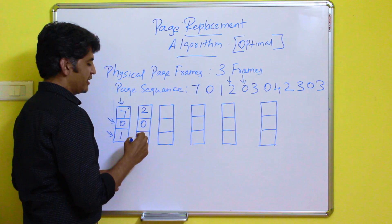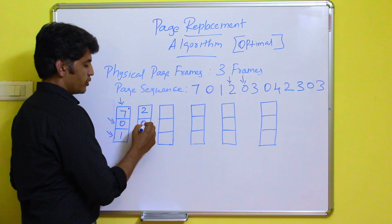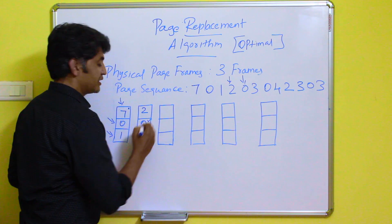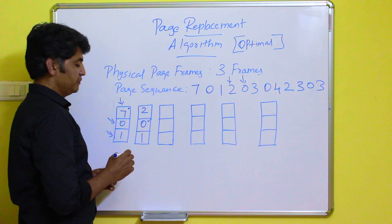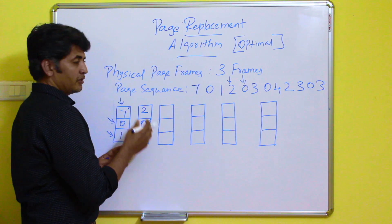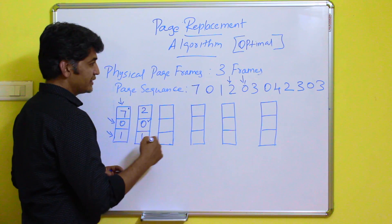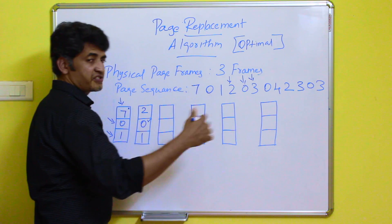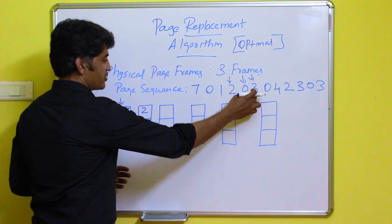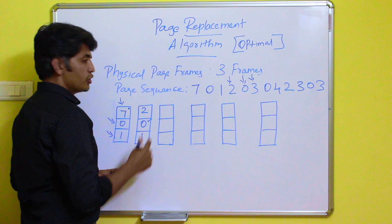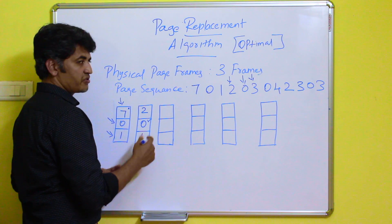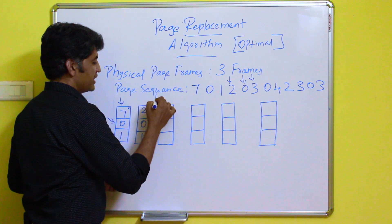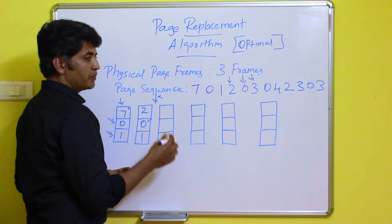Next, page 0 is required. The operating system verifies whether page 0 is in the physical frame — it is, so a page hit occurs. After that, page 3 is required for the next sequence. The operating system verifies whether page 3 is present, and it is not, so a page fault will occur.